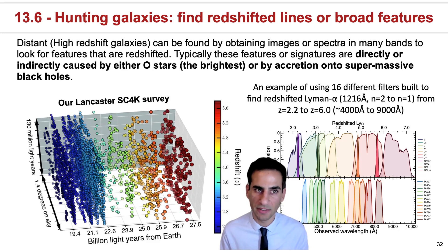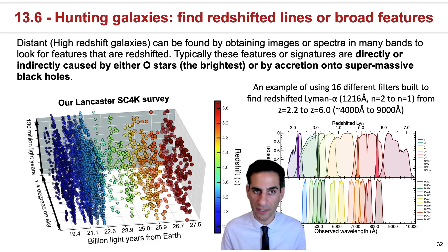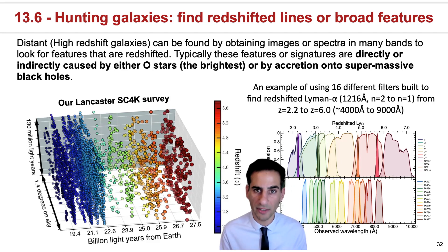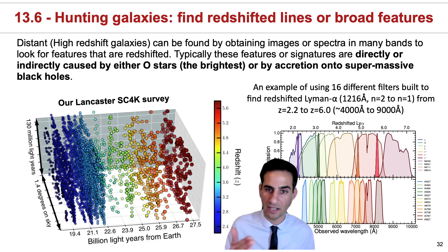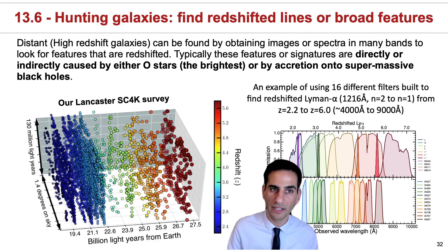From an observational perspective, if we want to understand how galaxies form and evolve, we actually need to find them — we need to hunt for them. And in practice, what we need to do is try to find redshifted lines so that we know how far away that galaxy is, and then we can actually study them.